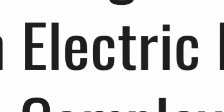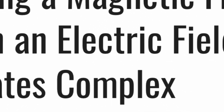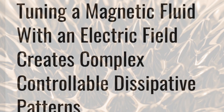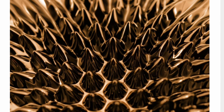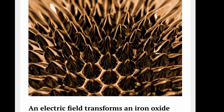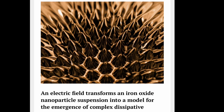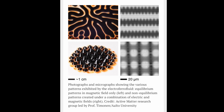This is Electric Universe Eyes, and today we're going to talk about tuning a magnetic fluid with an electric field, which creates complex controllable dissipative patterns. Featured on SciTechDaily.com, published December 29, 2021, by Aalto University: an electric field transforms an iron oxide nanoparticle suspension into a model for the emergence of complex dissipative structures. Researchers at Aalto University have shown that a nanoparticle suspension can serve as a simple model for studying the formation of patterns and structures in more complicated non-equilibrium systems, such as living cells. The new system will not only be a valuable tool for studying patterning processes, but also has a wide range of potential technological applications.